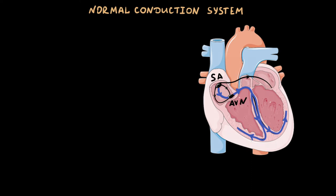Normally, rhythmic contraction of the entire heart is initiated and maintained by a single pacemaker: the sinus node. Therefore, it is the primary pacemaker.